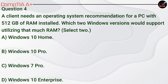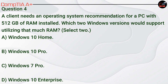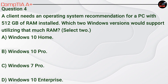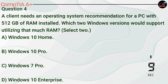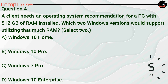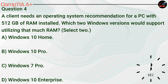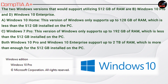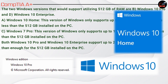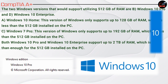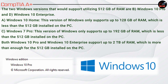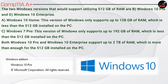Question 4. A client needs an operating system recommendation for a PC with 512 GB of RAM installed. Which two Windows versions would support utilizing that much RAM? Select two. A, Windows 10 Home. B, Windows 10 Pro. C, Windows 7 Pro. D, Windows 10 Enterprise. Windows 10 Home only supports up to 128 GB of RAM, which is less than the 512 GB installed. Both Windows 10 Pro and Windows 10 Enterprise support up to 2 TB of RAM, which is more than enough for the 512 GB installed on the PC.